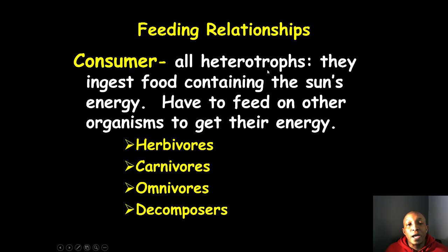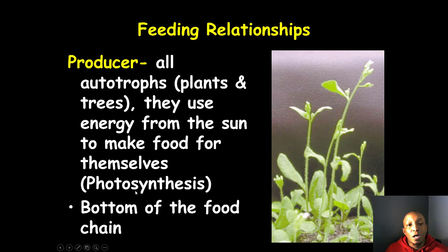A consumer includes all heterotrophs — they must ingest food containing the sun's energy and feed on other organisms. Consumers include herbivores, carnivores, omnivores, and decomposers. A producer includes all autotrophs — plants and trees that use energy from the sun to make their own food through photosynthesis. Producers are at the bottom of the food chain.